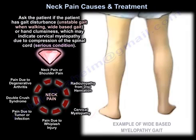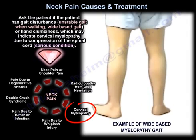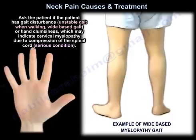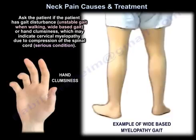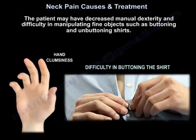Ask the patient whether they have gait disturbance — unstable gait when walking, wide-based gait, or hand clumsiness. These may indicate cervical myelopathy due to compression of the spinal cord, which is a serious condition. The patient may have decreased manual dexterity and difficulty manipulating fine objects, such as buttoning and unbuttoning shirts.